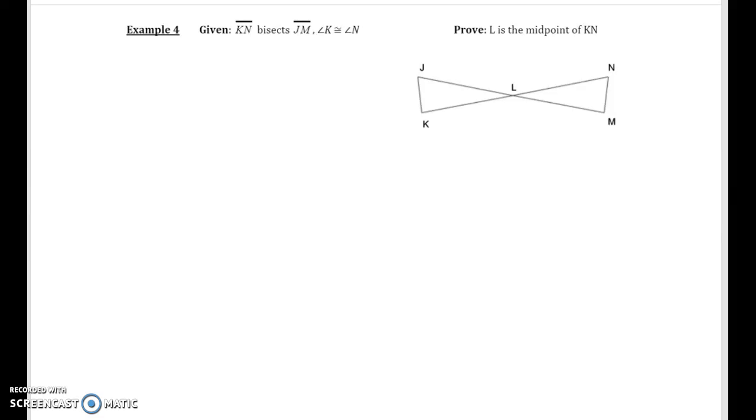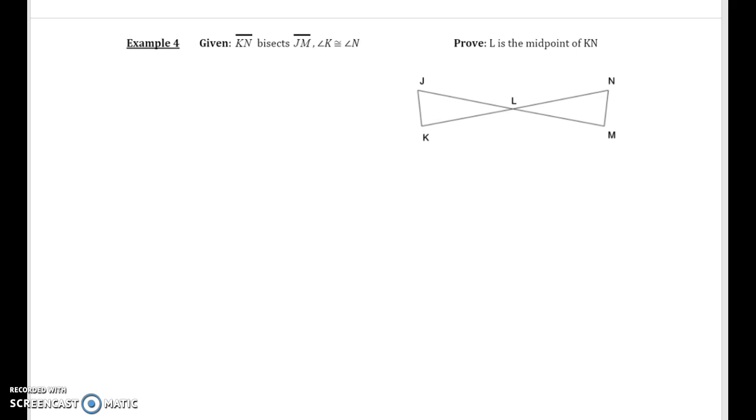Unit four lesson five, this is example number four. Again, this will be the two-column proof video and then I'll do another video for the flow proof. Anytime you're asked to do a proof with triangles, chances are you're going to have to do some kind of triangle congruence. Let's put our methods down on the side.